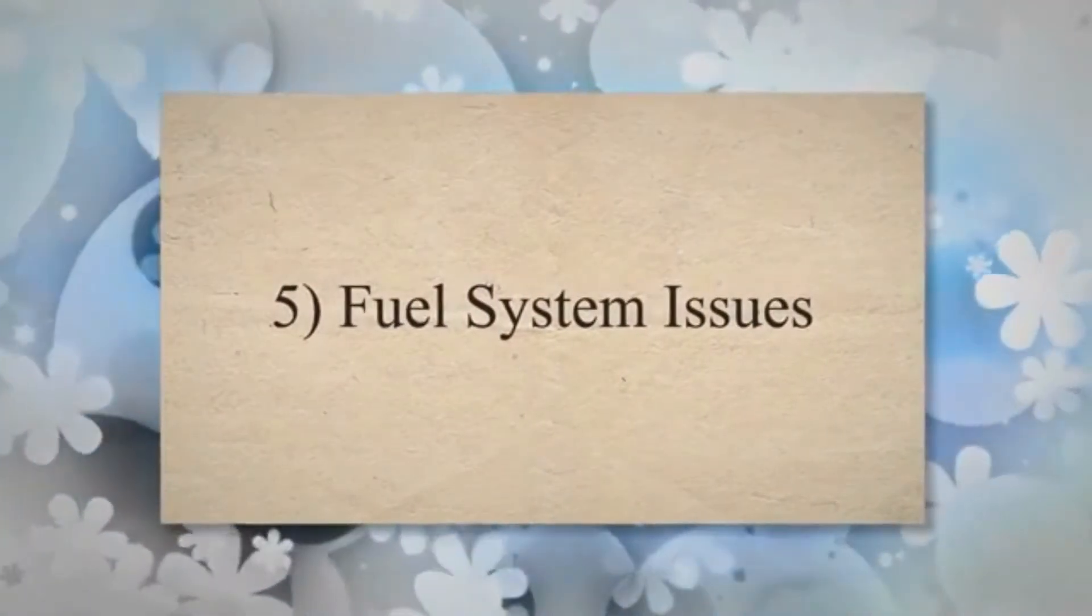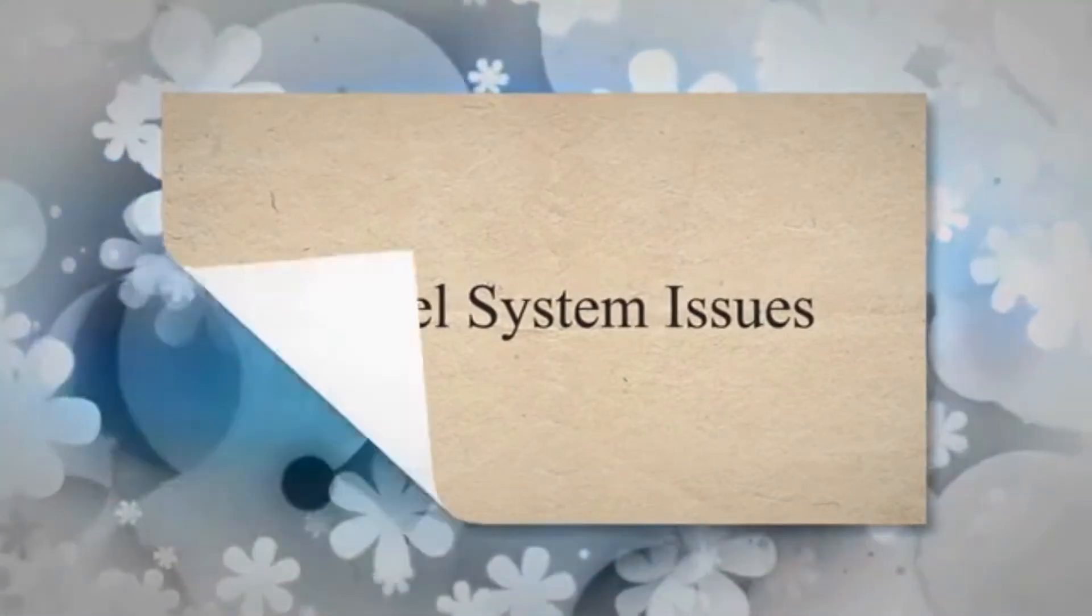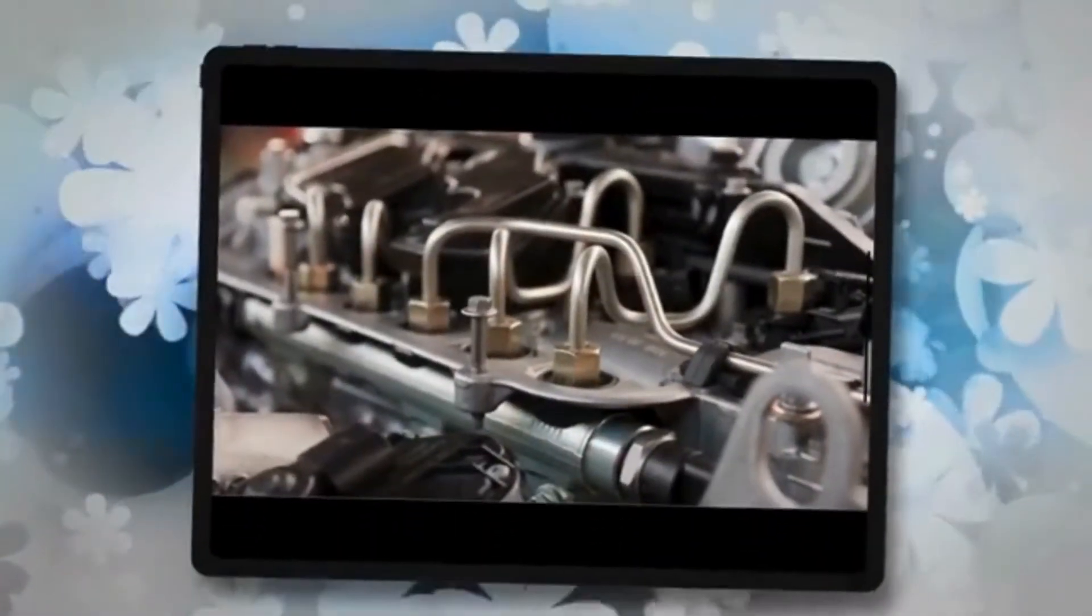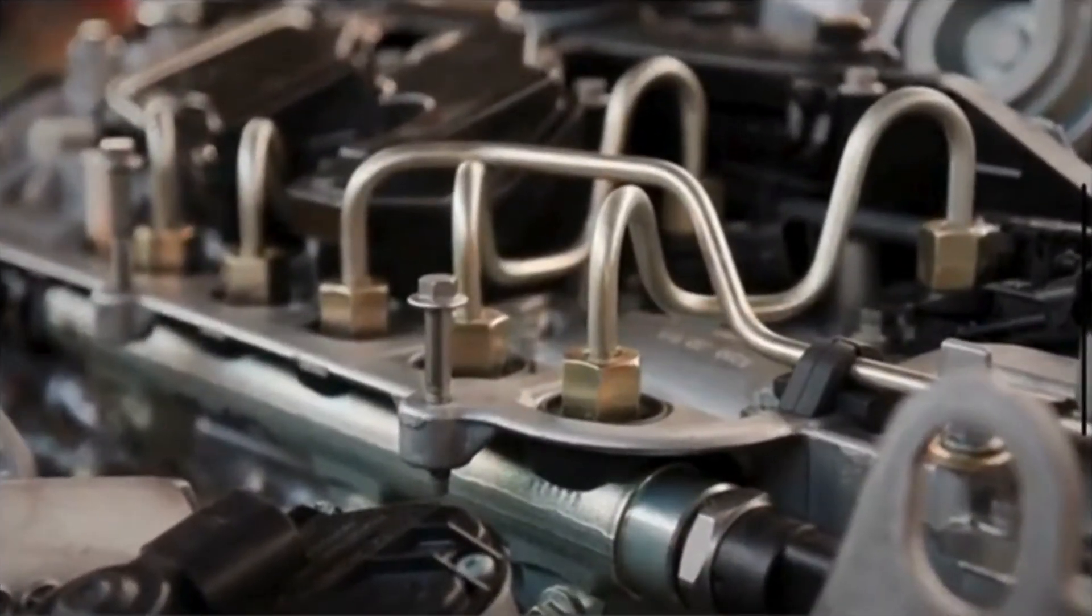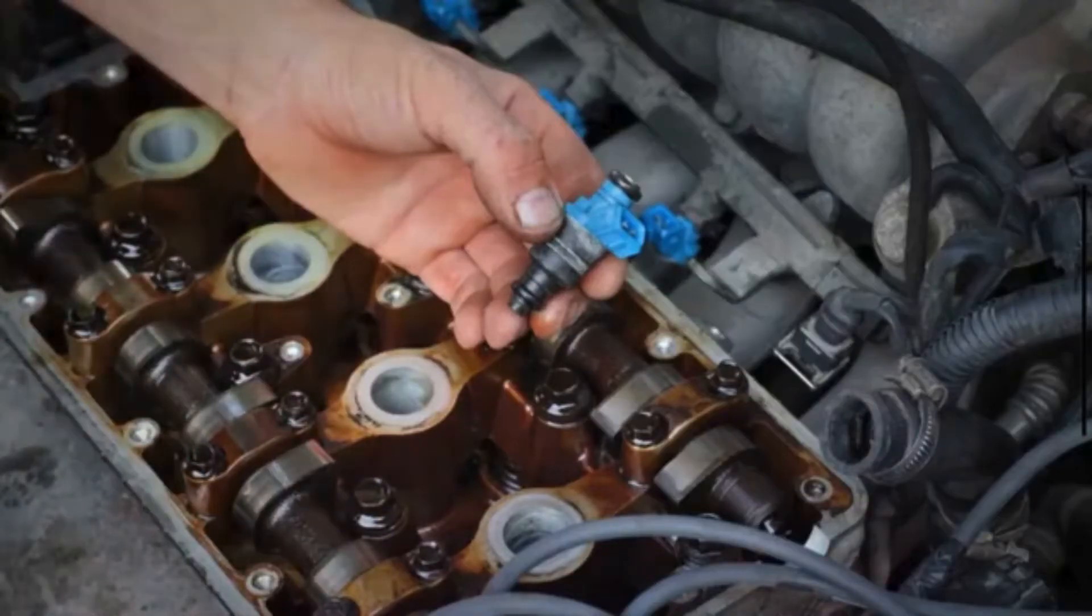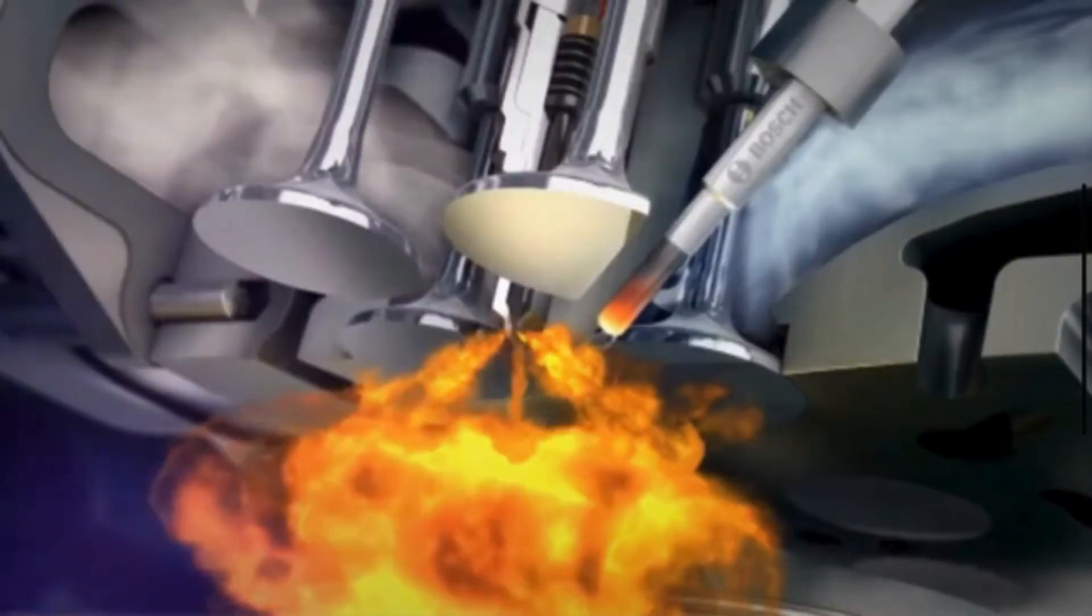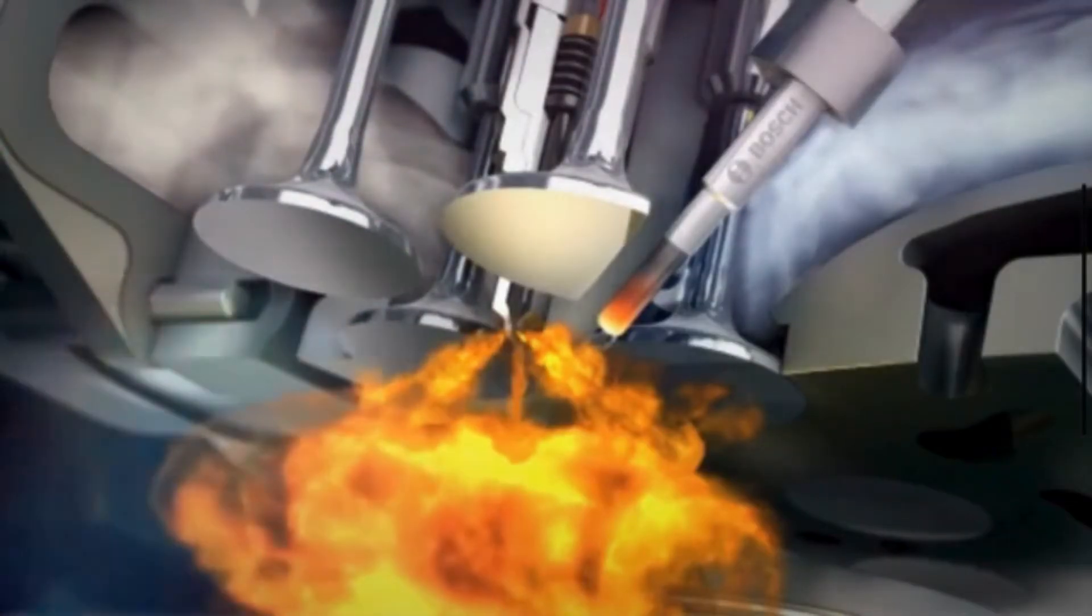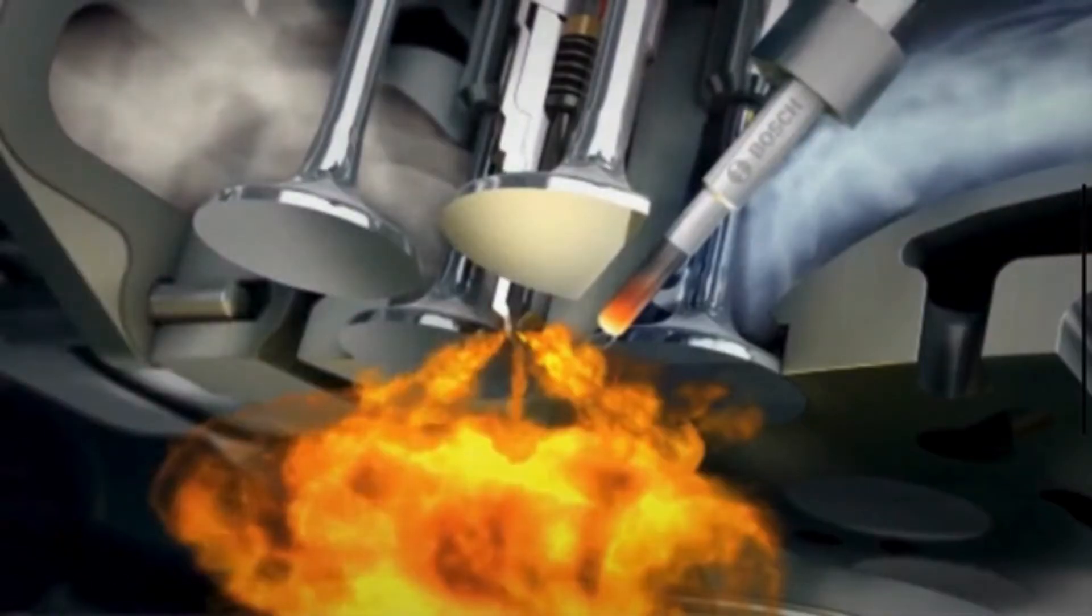5. Fuel System Issues. Problems in the fuel system, such as clogged or malfunctioning fuel injectors, a faulty fuel pressure regulator, or a vacuum leak, can affect the air-fuel mixture. An incorrect mixture can result in incomplete combustion, which may harm the catalytic converter's efficiency and trigger the P0430 code.